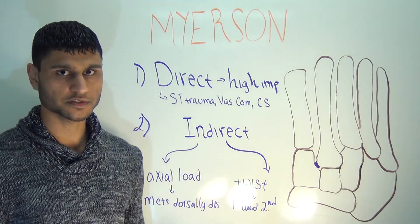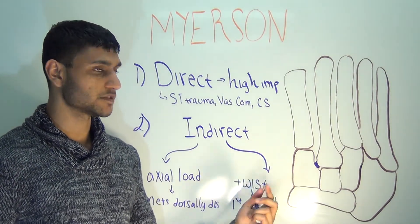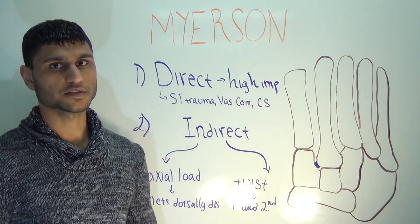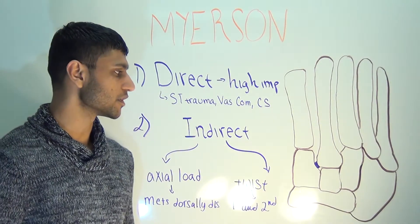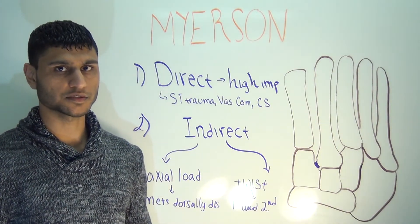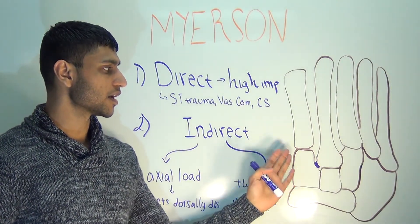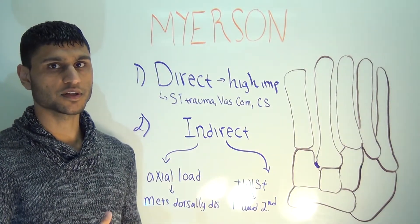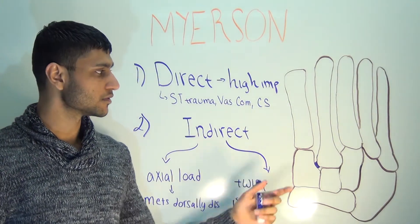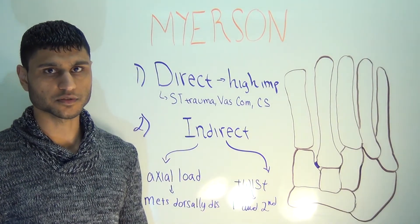What do you expect to see on x-ray? First, you would expect to see an increase in space, or diastasis, between the first and second metatarsal bases. This makes sense because there is no inter-metatarsal ligament connecting the bases of the first and second metatarsals. You can also see a lateral deviation, or displacement, of all the lesser metatarsals as a unit — because all the lesser metatarsal bases are connected via inter-metatarsal ligaments.